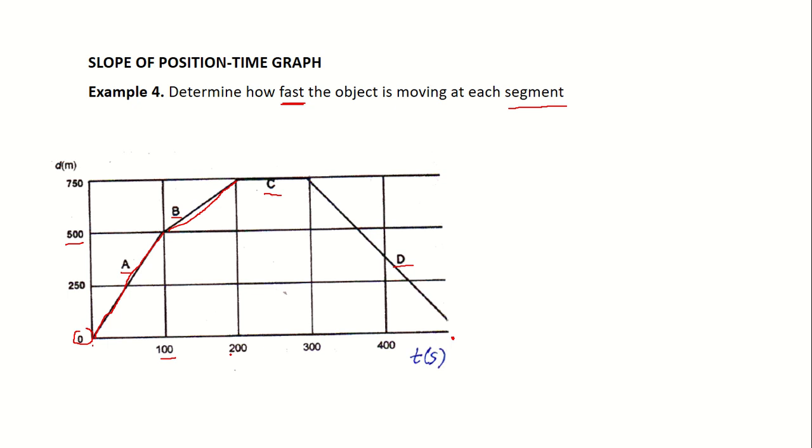And then, from 100 seconds to 200 seconds, my interval is 100 seconds, it moved from 500 to 750. So, definitely it slowed down, right? Because in the first 100, it was able to travel 500 meters. But here on B, on the second 100, it only traveled 250 meters.